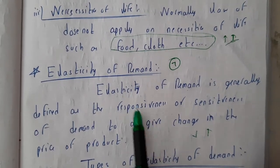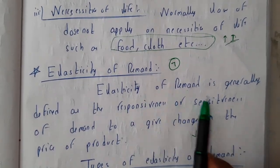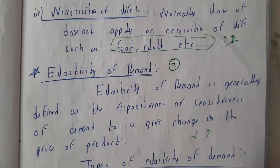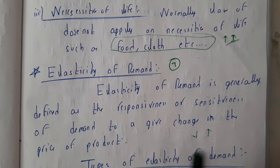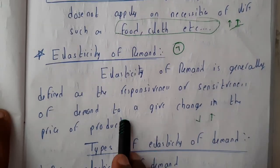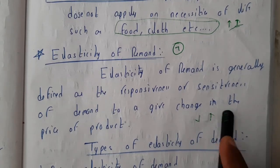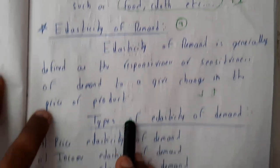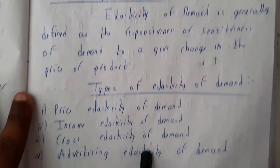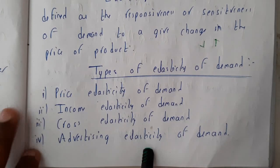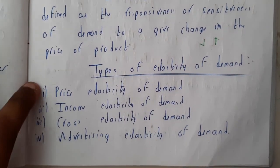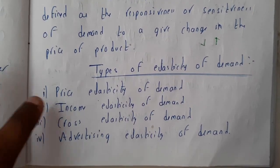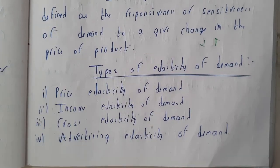Elasticity of demand is generally defined as the responsiveness or sensitiveness of demand to a given change in the price of a product. There are four types of elasticity of demand. In this lecture we'll go in detail about price elasticity, and after that we'll go through an introduction to all the others.